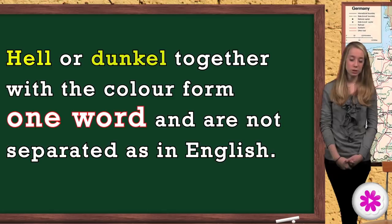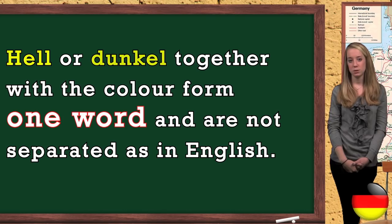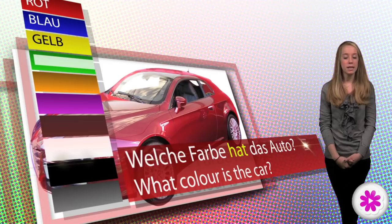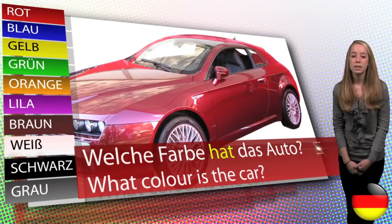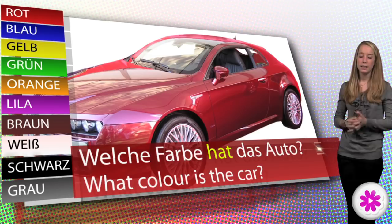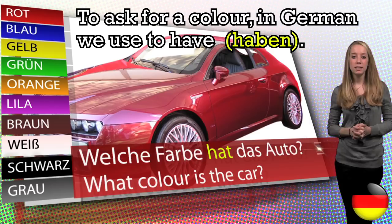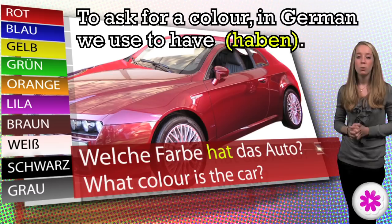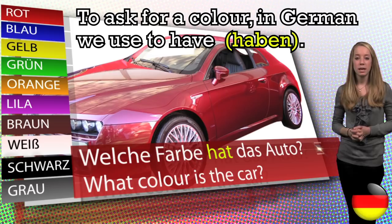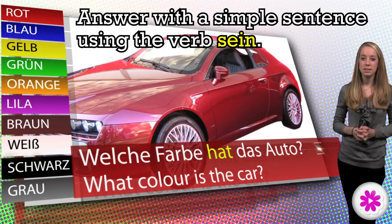To practice a bit, you will tell me what color the objects that will appear next to me have. Let's make an example. Please notice that in English we use the verb 'to be' to ask for a color. In German, in contrast, we use 'to have'. Now you could simply answer 'red', but I know you're clever enough for some simple sentence. Using the appropriate form of the verb to be, sein, so the right answer is...